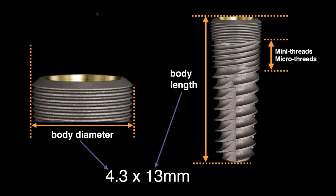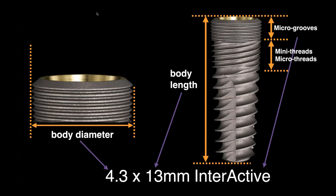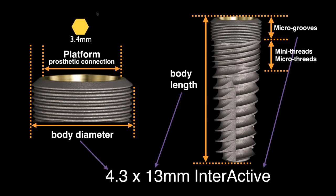A question about the parts of an implant: different manufacturers have different names for micro grooves and micro threads — some call it laser lock, for example. The key components are the body, platform or prosthetic connection, micro grooves/threads at the neck, and the bevel. Feel free to take a screenshot of that terminology slide.